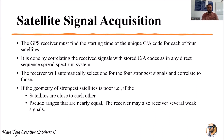How can we find the starting time of the unique C/A code? It is done by correlating the received signal with stored C/A codes in any direct sequence spread spectrum system. Whatever signals are received from the satellites will contain some stored C/A code.